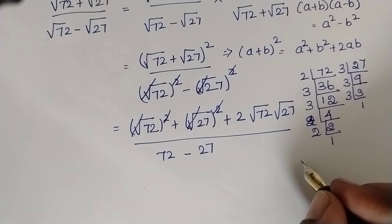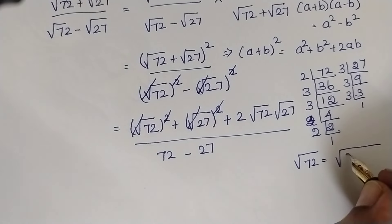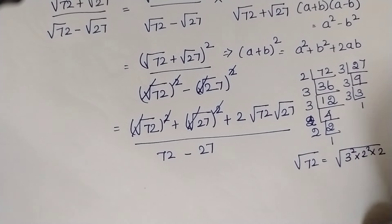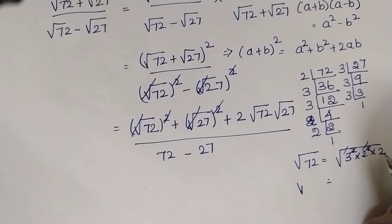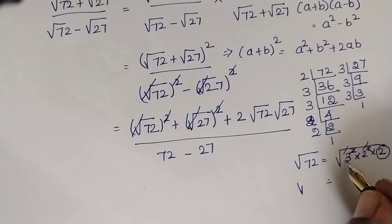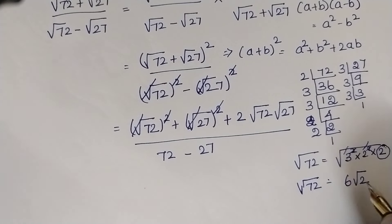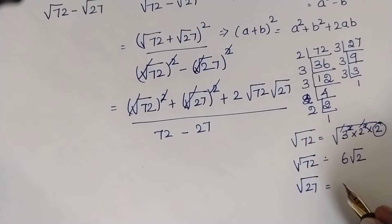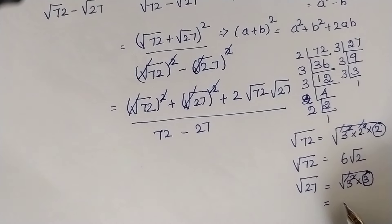Now √72 = √(3² × 2² × 2). The square and root of 3 cancel, the square and root of 2 cancel, leaving 6√2. Therefore √72 = 6√2. Similarly, √27 = √(3² × 3). The square and root cancel, leaving only one 3 under the root. Therefore √27 = 3√3.